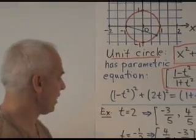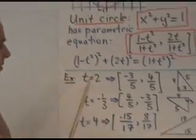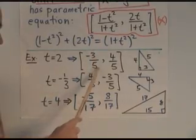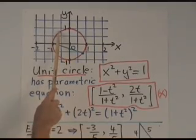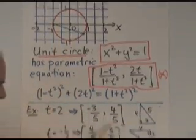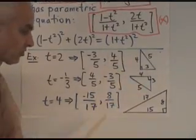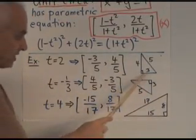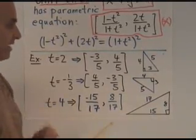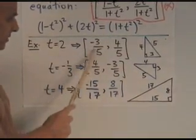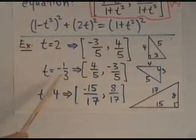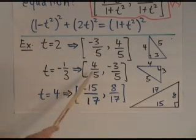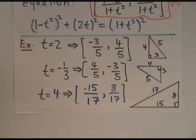All right let's have some look at some examples. If t is equal to 2, plug t equals 2 into here you get (-3/5, 4/5). That's a point which is right about there. And it corresponds to what's called a Pythagorean triple. Three numbers that are the side lengths of a right triangle. Okay so in this case it corresponds to the Pythagorean triple 3-4-5. If we plug t equals minus one third in then we get (4/5, -3/5) which is down here. And that also corresponds essentially to the same Pythagorean triple.